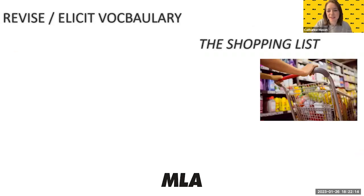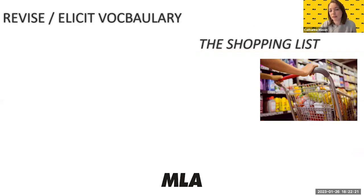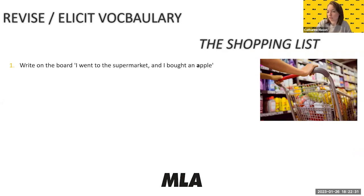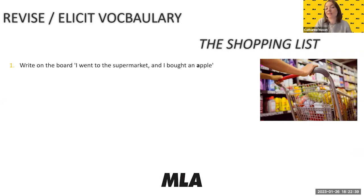The next game is called the Shopping List, and this is where we start to look at games that focus on vocabulary. We write on the board: 'I went to the supermarket and I bought an apple.' You can indicate the article 'an' as something to notice. Then we nominate a student to add an item, and they have to repeat the whole sentence.